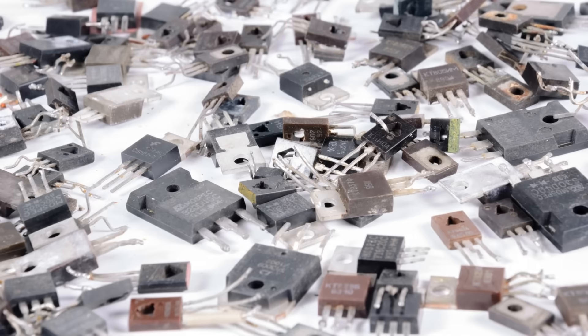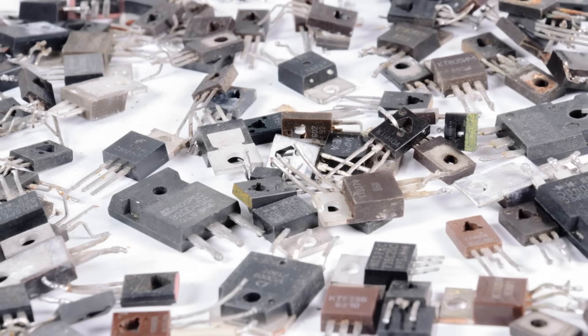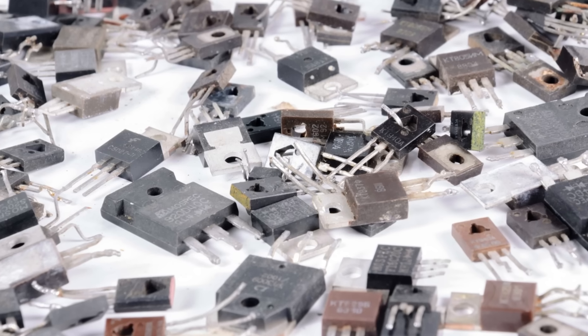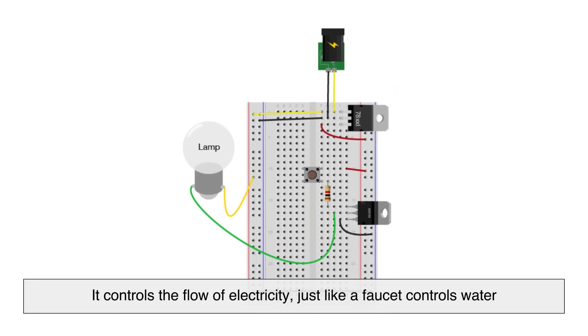So let's start with the basics. What even is a transistor? In the simplest terms, a transistor is a tiny electronic switch. It controls the flow of electricity, just like a faucet controls water.